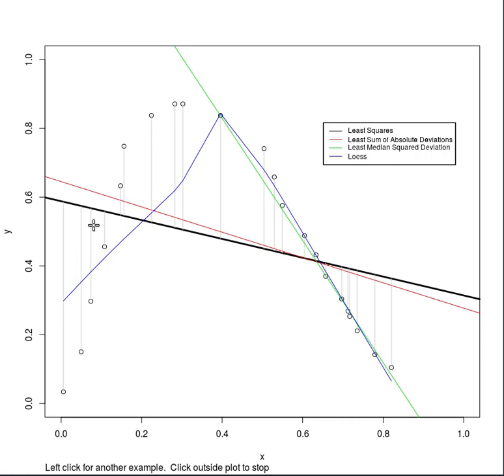And so what least squares is trying to do is to not be embarrassed by a major error here and to not be embarrassed by really large errors way out here. So it's giving a lot of emphasis to these large errors and trying to not make them worse than they already are by tilting downward.